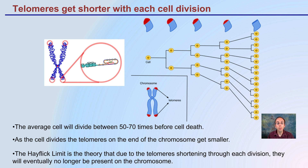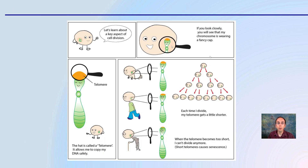As each cell divides, the telomeres at the end get shorter and shorter. This is a theory or limit on how short the telomeres can get through each cell division, and eventually when they're too short, they're no longer present on the chromosome. The cartoon image shows that when you're young, you have those nice large end caps. As you get older, they get shorter, and as we age further, they get even shorter to the point where you can only divide so many times before the telomere is basically gone, the chromosome is unprotected, and that cell will go through a natural death process.